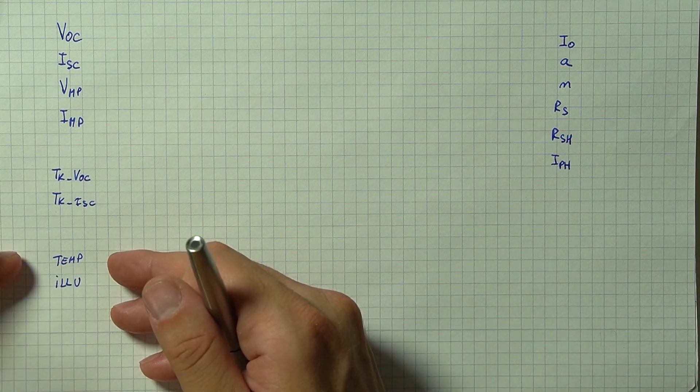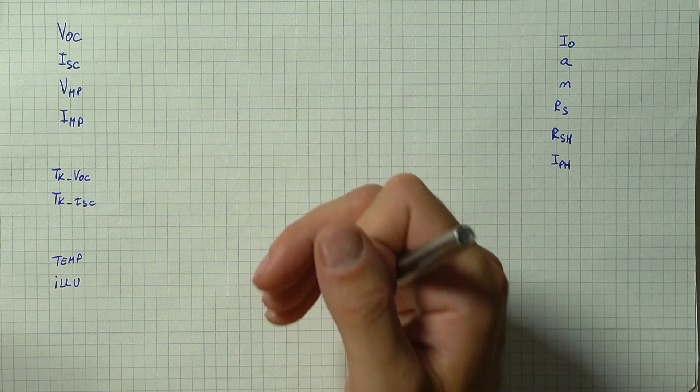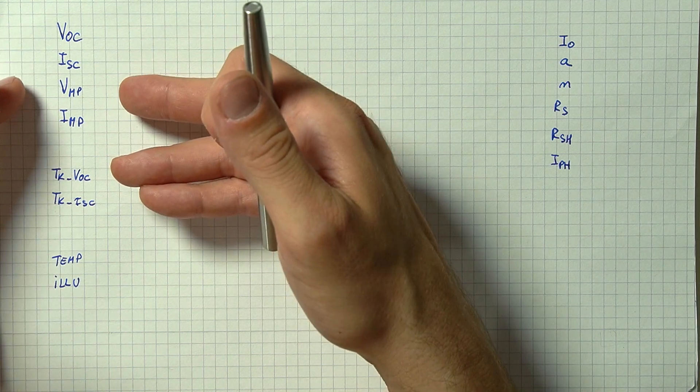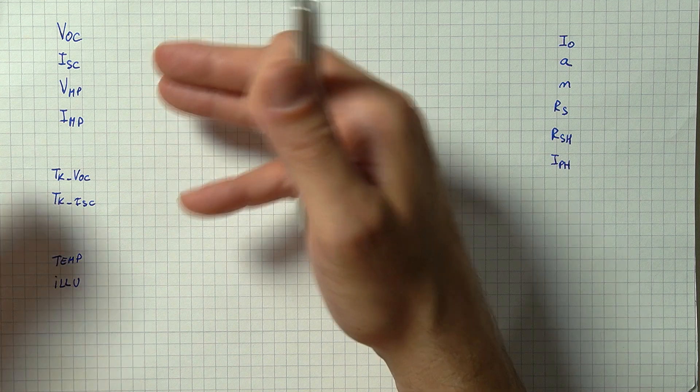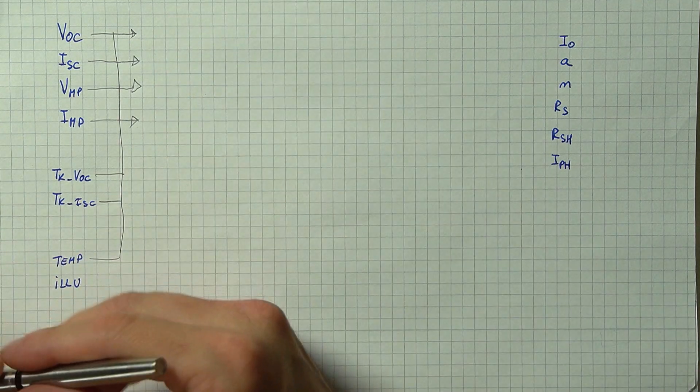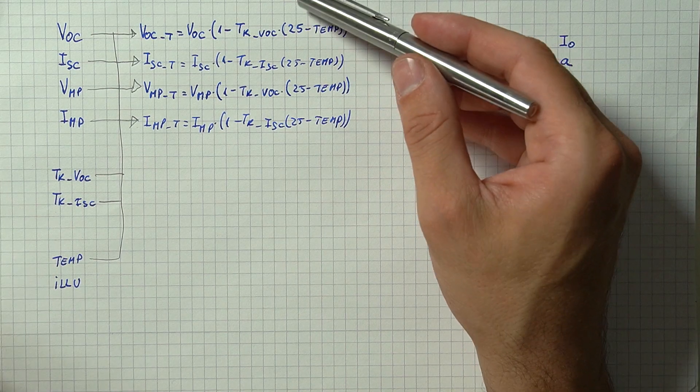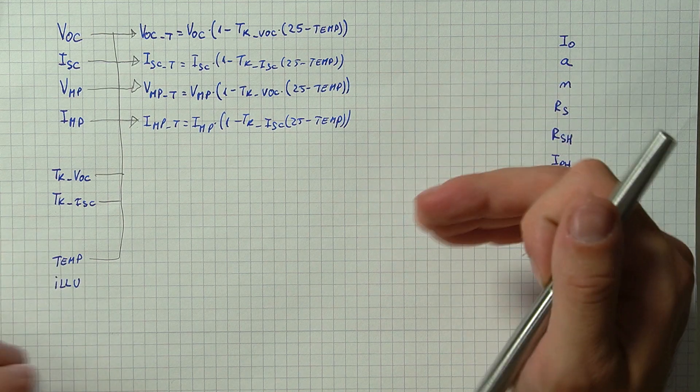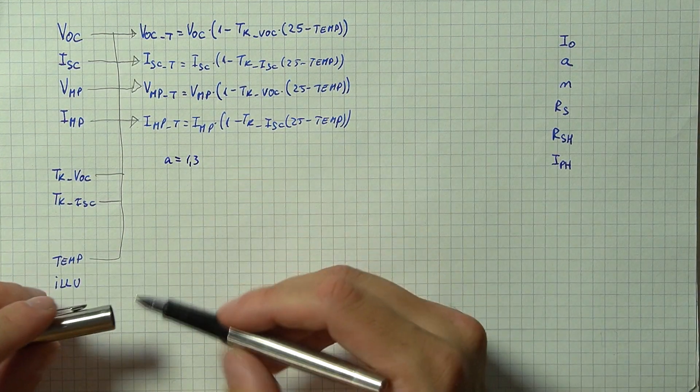So first step we can take our temperature and temperature coefficients to recalculate our initial values at the temperature of simulation. For this we can take the assumption that our voltage temperature coefficient is valid not just for the open circuit voltage but also for the maximum power point voltage. In the same way we can assume that the temperature coefficient of the short circuit current is the same as for the maximum power point current. Using all of these values we can write the following new parameters. For these calculations the temperature will be expressed in degrees Celsius and I put in 25 as reference.